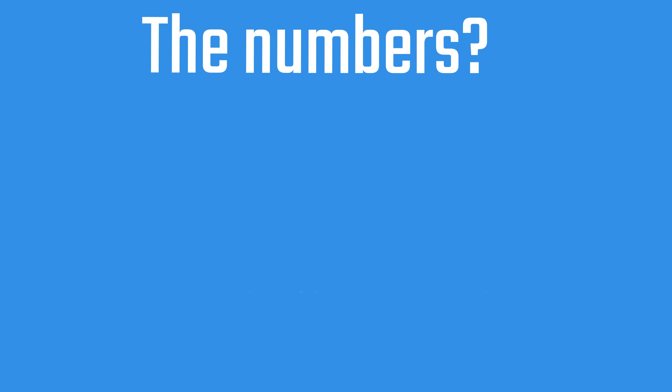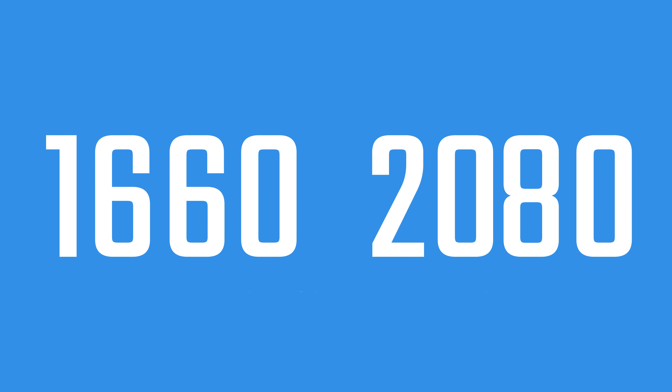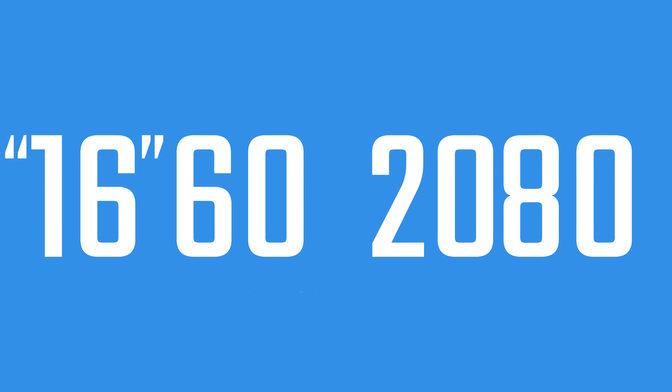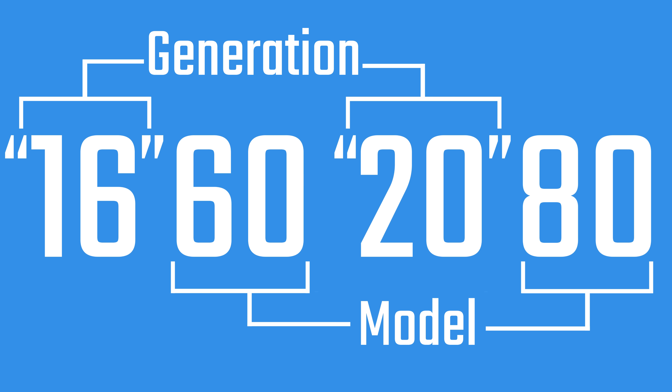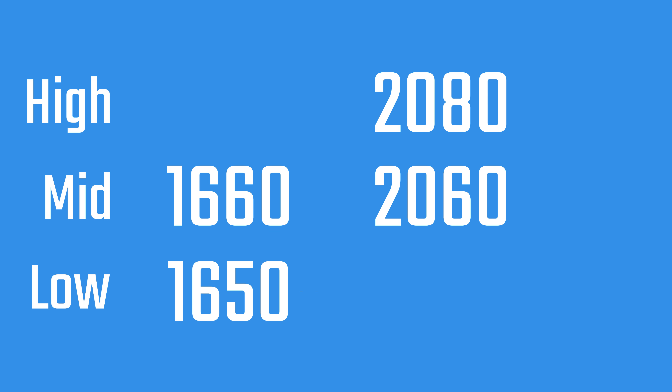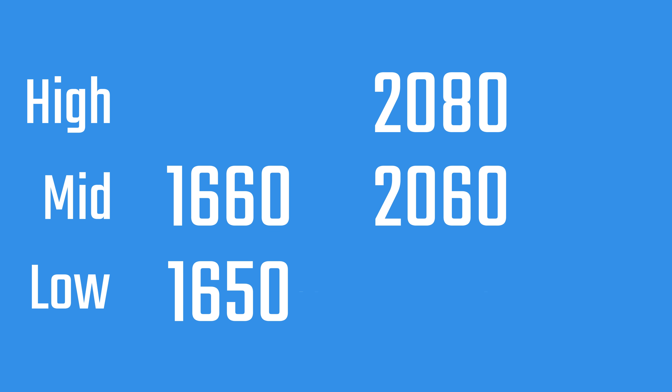When it comes to the numbers, the first two tell you which generation the card is from — so 16 in 1660 or 20 in 2080 — and the second number tells you the model number or variant you're looking at, with generally speaking the higher the better. So a 1650 is a more low-end card compared to a 1660, and on the RTX side, a 2060 is a lower-end card compared to a 2070.